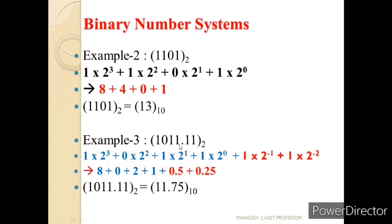Now let us understand an example with fractional binary numbers: 1011.11 base 2. Before the decimal point, starting from position 0: 1 × 2⁰, 1 × 2¹, 0 × 2², 1 × 2³. After the decimal point: 1 × 2⁻¹ and 1 × 2⁻². Converting to decimal: 8 + 0 + 2 + 1 + 0.5 + 0.25 = 11.75. This is how binary number systems with fractional parts are represented.